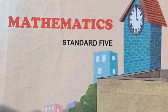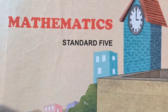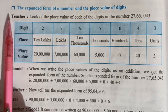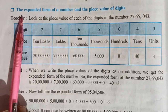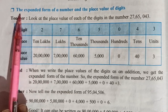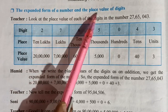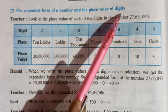I want that everybody should open their maths textbook as well as your combined book number 1, and pay attention as I'm explaining. Now we are going to study the next concept: the expanded form of a number and the place value of digits.